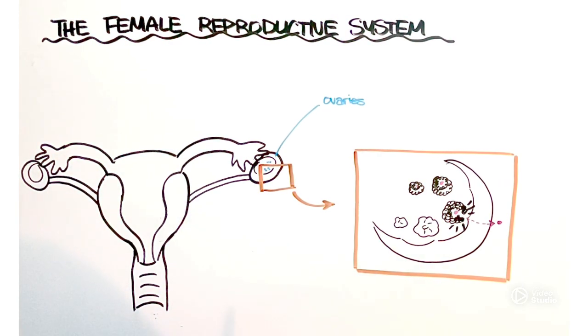Now the female gamete is of course the egg and eggs are produced inside of these structures here known as ovaries. Unlike males who continuously produce sperm cells throughout their entire lives beginning at puberty, females are actually born with all the eggs that they will ever have inside of these ovaries.